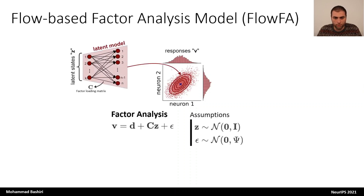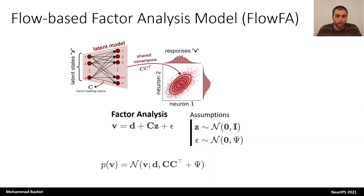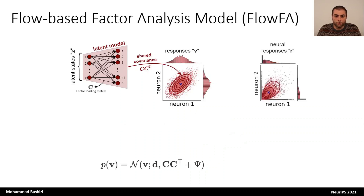The model makes two simplifying assumptions. One is that the latent variables are distributed according to a standard normal distribution, and the other is that the noise comes from a normal distribution with mean zero and a diagonal covariance matrix. With these assumptions, we can rewrite the factor analysis model as a probabilistic model of the observations v, where we assume v comes from a normal distribution with mean d and covariance matrix CC transpose plus psi. However, neural responses are rarely Gaussian distributed, so to be able to use the factor analysis model, we need to transform the responses such that they can be captured more easily by a Gaussian distribution.